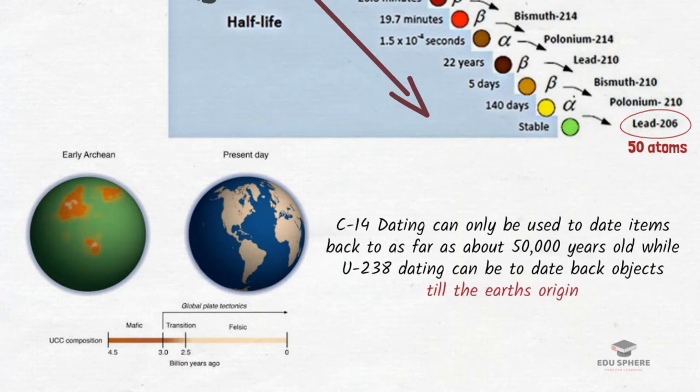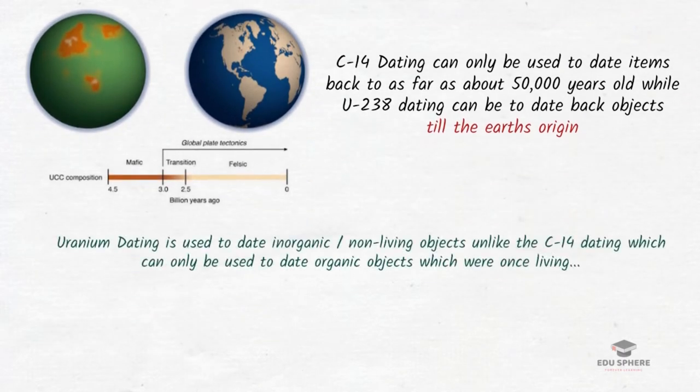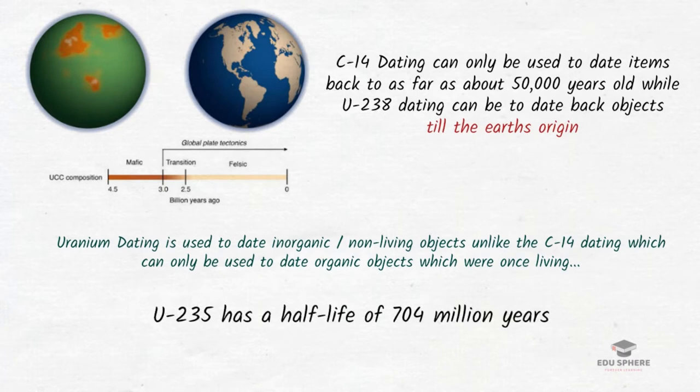While carbon-14 dating can only date items back to 50,000 years, U238 dating can reach back to the origin of Earth. Besides, this technique can also be used to date inorganic and non-living objects, unlike carbon-14 dating. One more advantage is that the other isotope, uranium-235, has a half-life of 704 million years.